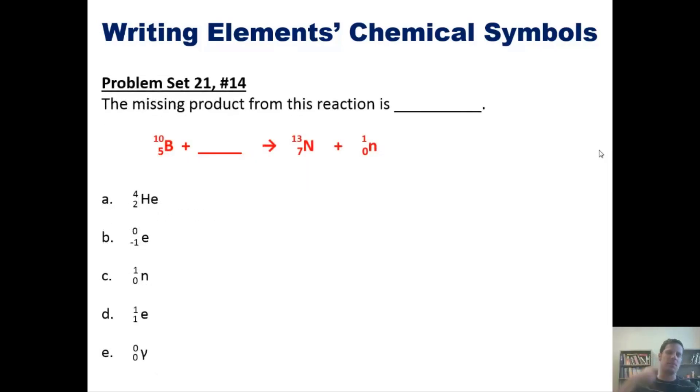Here's another one. The missing product from this reaction is what? Make sure your math balances. Whatever number goes in the upper left corner, when added to 10, must equal 13 plus 1, which is 14. Similarly, the lower left quadrant number, when added to 5, must equal 7 plus 0, which is 7. That lower left number is the atomic number for whatever element goes in this blank.